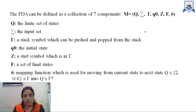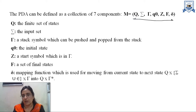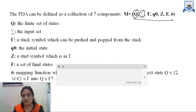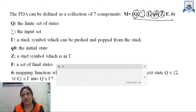Pushdown automata is a collection of seven tuples. Q is the finite set of states, sigma is the set of inputs, tau is the collection of stack symbols, q0 is the initial state, Z is the initial stack symbol, F is the final state, and delta is the transition function.